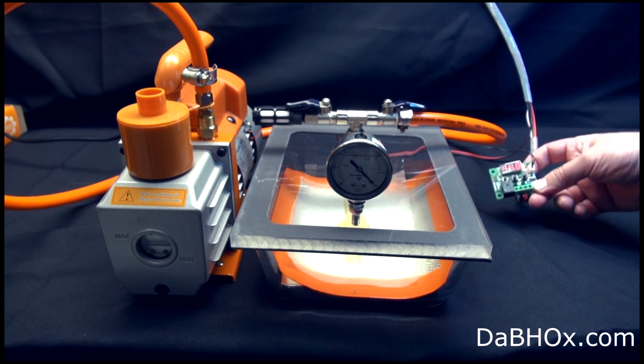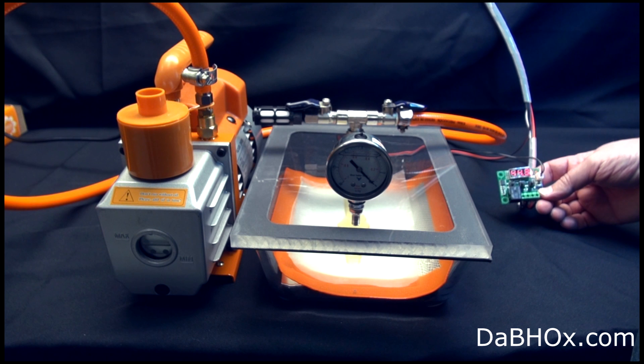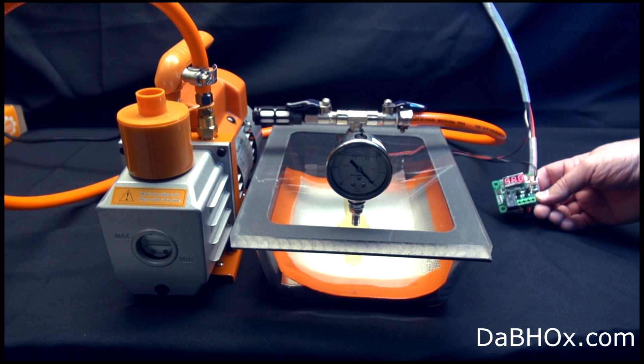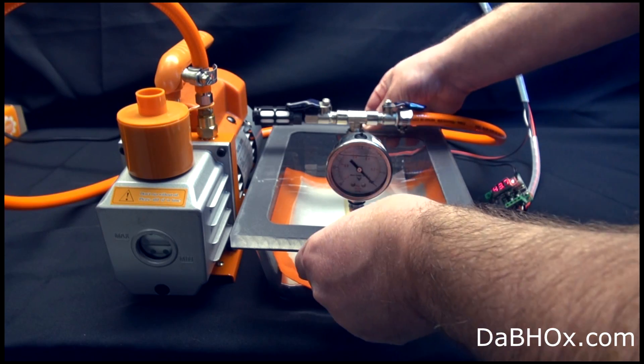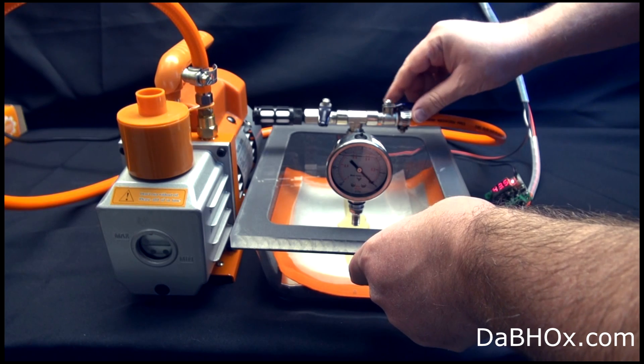Set desired temperature. You're going to have options to either use Celsius for European guys or Fahrenheit for US market. And the unit is actually both 110 and 220 volts compatible. Set desired temperature. Close the air valve. Open the vacuum valve.